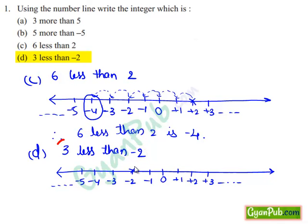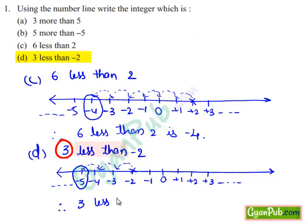And move 3 steps to the left of minus 2: 1, 2, 3. We reach minus 5. So, the integer which is 3 less than minus 2 is minus 5.